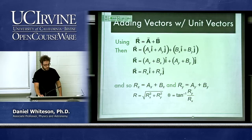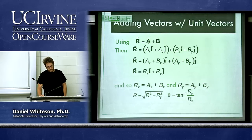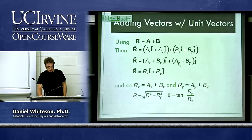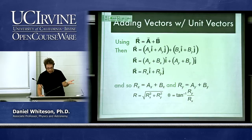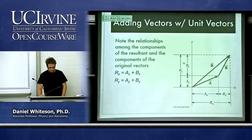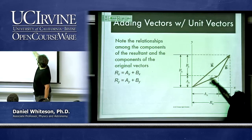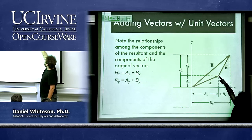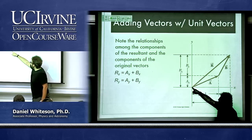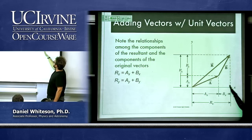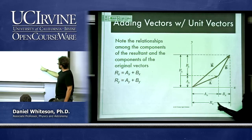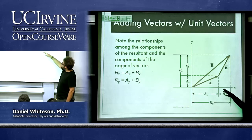When adding two vectors A and B, break each into x and y components, then add components separately: Rx = Ax + Bx and Ry = Ay + By. Visually, you can use the tip-to-tail approach — put the tip of one vector at the tail of the other, then draw the result from the start of the first to the end of the second. The x and y components add independently.